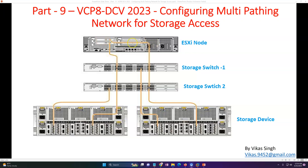Your ESXi host has connections to both SAN switch 1 and SAN switch 2. If card 1 fails, it still has access through card 2. If card 2 fails, it still has access through card 1. If a SAN switch goes down, access continues through the other switch. Similarly, if one storage controller fails, the storage is accessible through controller 2.